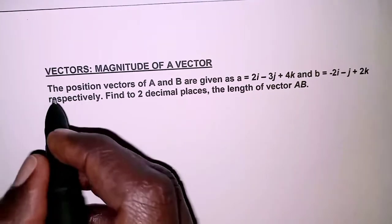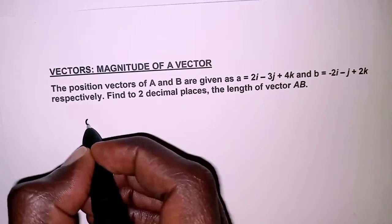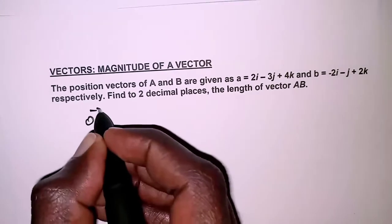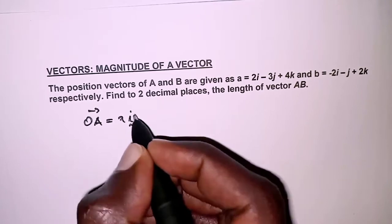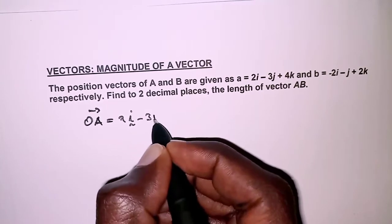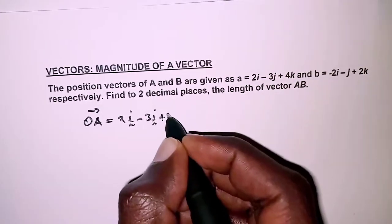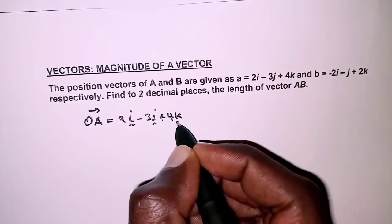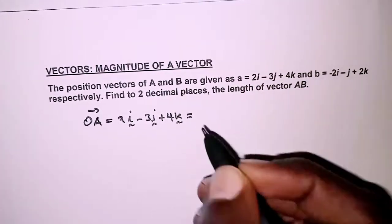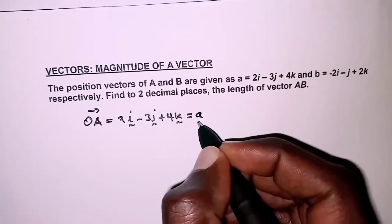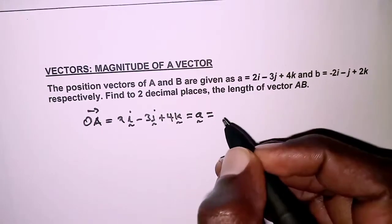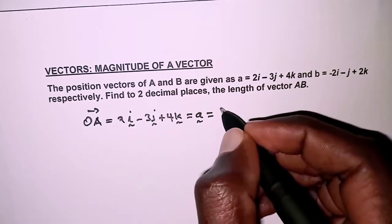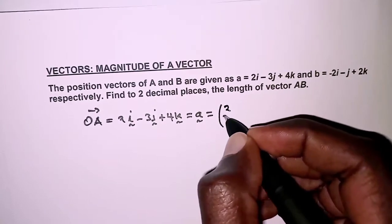From the question we are told that the position vector of A, that is OA, is equal to 2i - 3j + 4k. This can also be expressed as a column vector: (2, -3, 4).